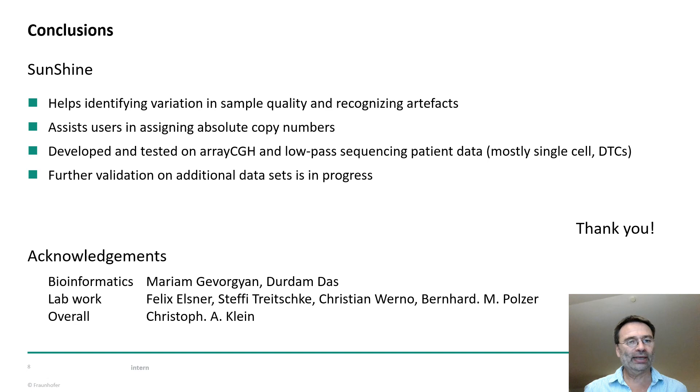Summarizing, the Sunshine tool helps identifying variation in sample quality and recognizing artifacts. It assists users in assigning absolute copy numbers which is the ultimate aim of the tool. We developed it and tested it on arrayCGH and low-pass sequencing data from patients, mostly single cells and disseminated tumor cells, and work on further validation on additional data sets. Cell line data is underway.